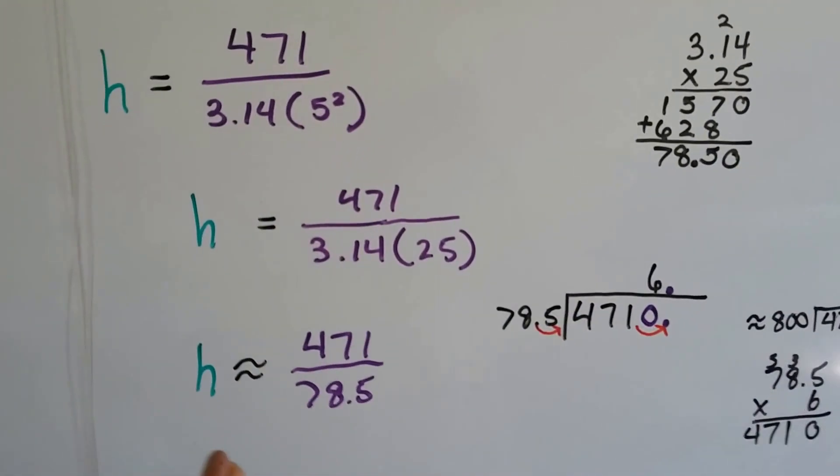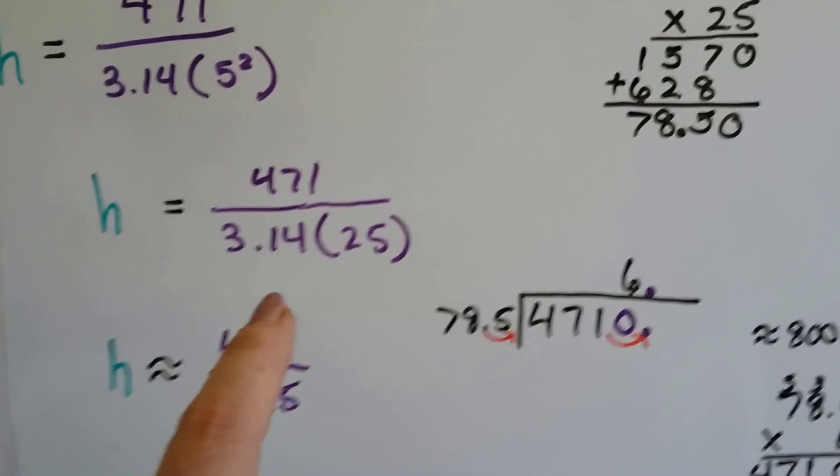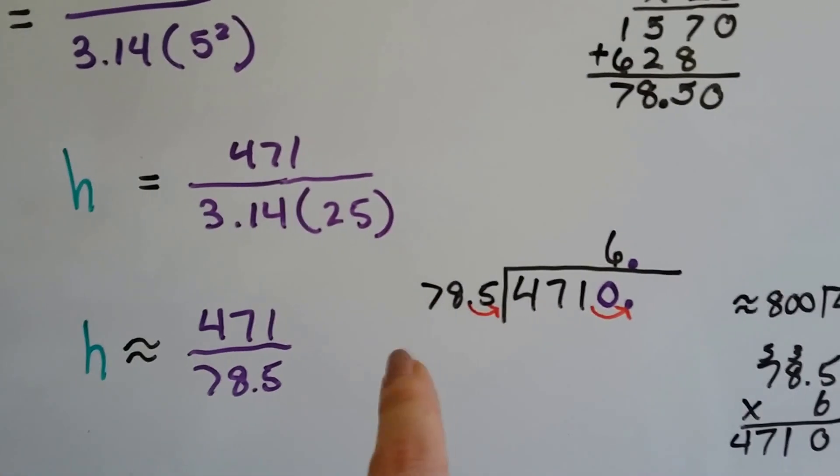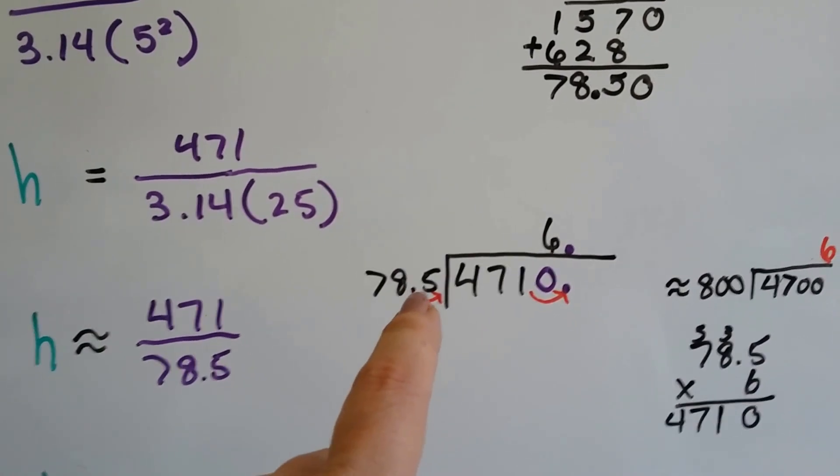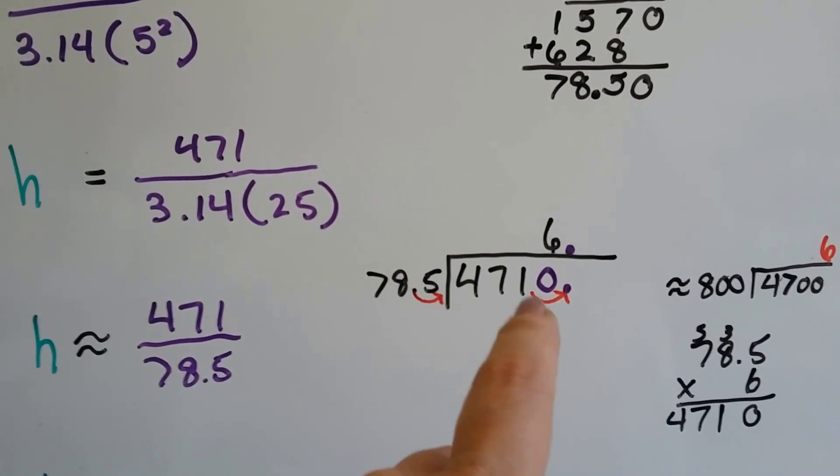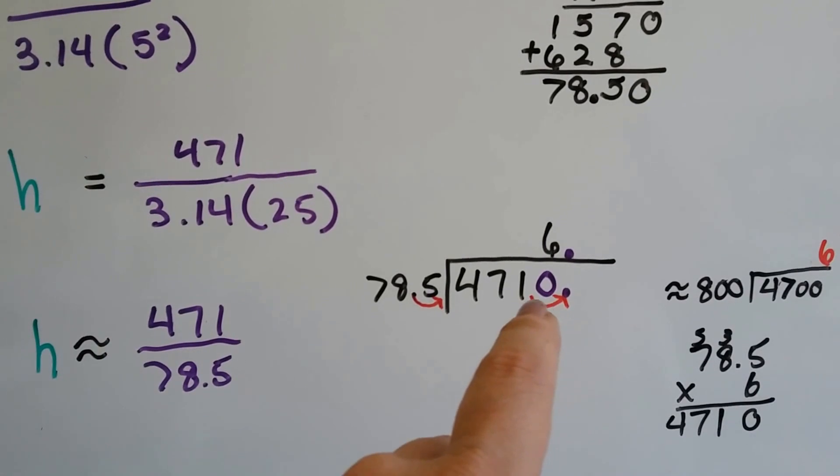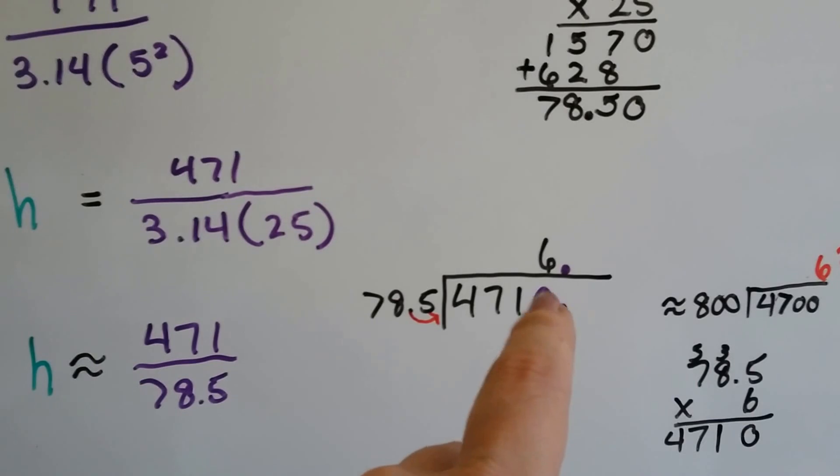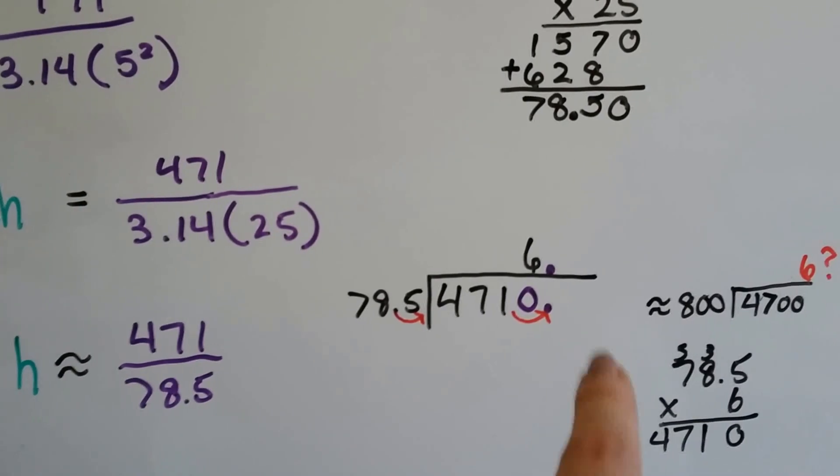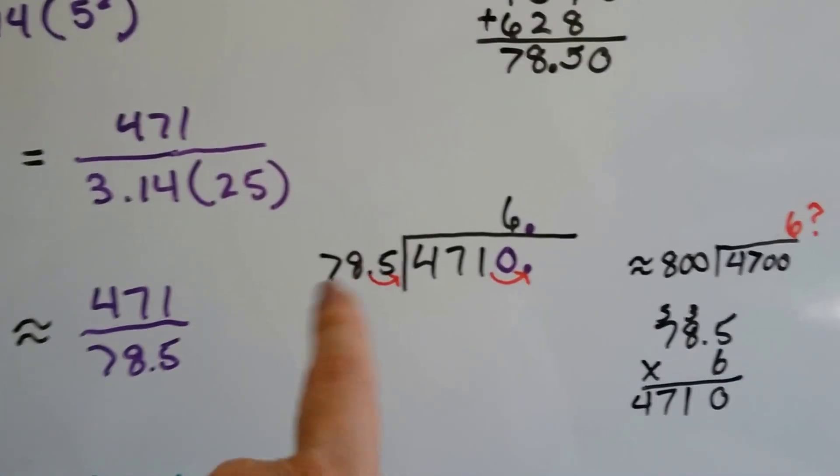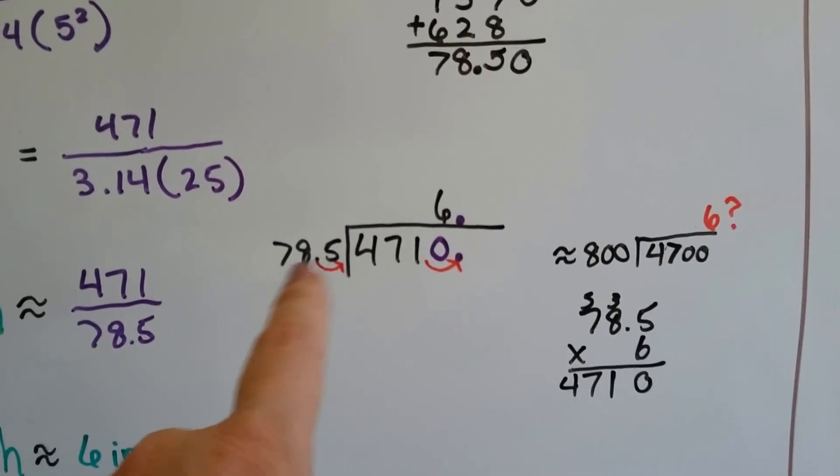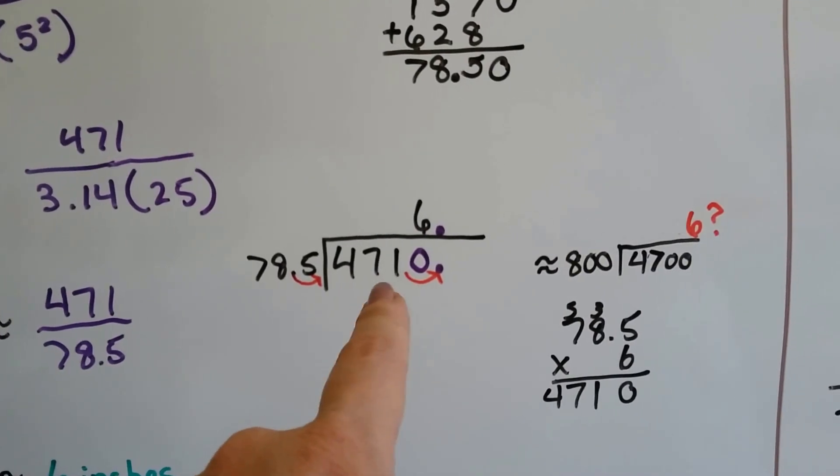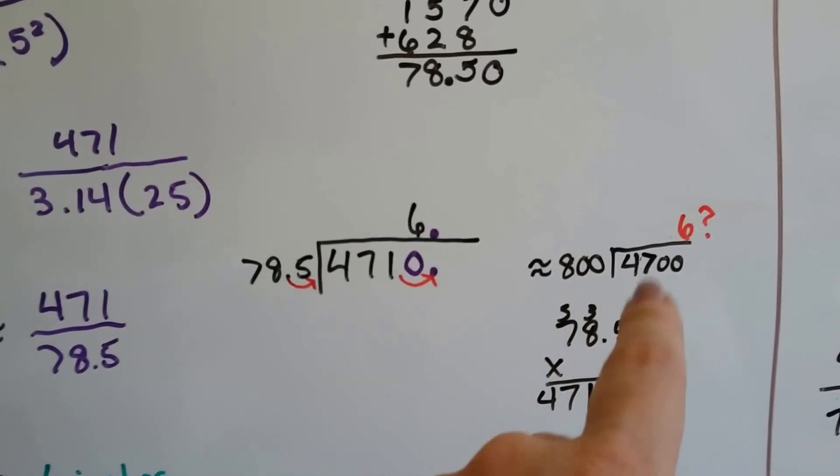Now all we have to do is divide this 78.5 into the 471. Doing it with long division, we move the decimal point to behind the 5, which means we have to move the decimal point from behind this 1 in the 471 to another space and put a 0 there to make up for it. So now the decimal point is going to go up here. I do a little rounding off, and 785 is close to 800, and this is close to 4700. So how many times can 800 go into 4700?